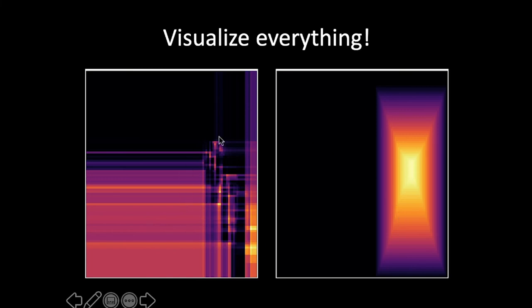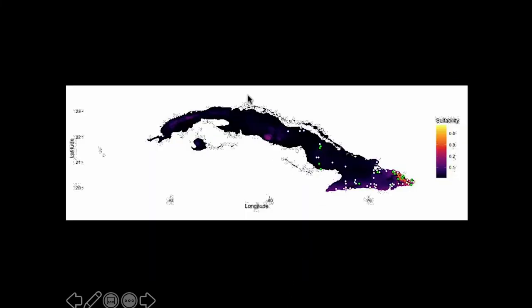These differences are not visible when you plot models onto the landscape where they were trained — it's something you can only see when you visualize in environment space. Most biologists, if they visualized these models this way and found similar fits in geographic space, would throw the nonsensical one away immediately. But we're publishing models that look like this all the time, and the reason is because we're not actually visualizing them. These plots are coming out of the new ENMTools R package.